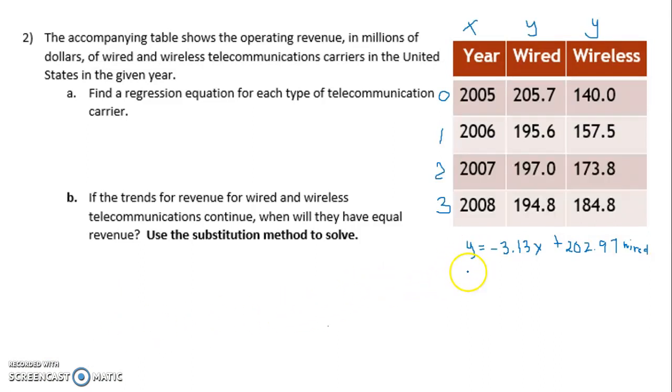So this time around we found Y equals 15.07x plus 141.42. When I read part B, both of this was to answer part A, and this was the wireless. It says if the trends for revenue for wired and wireless telecommunications continue, when will they have equal revenue? Use the substitution method to solve.